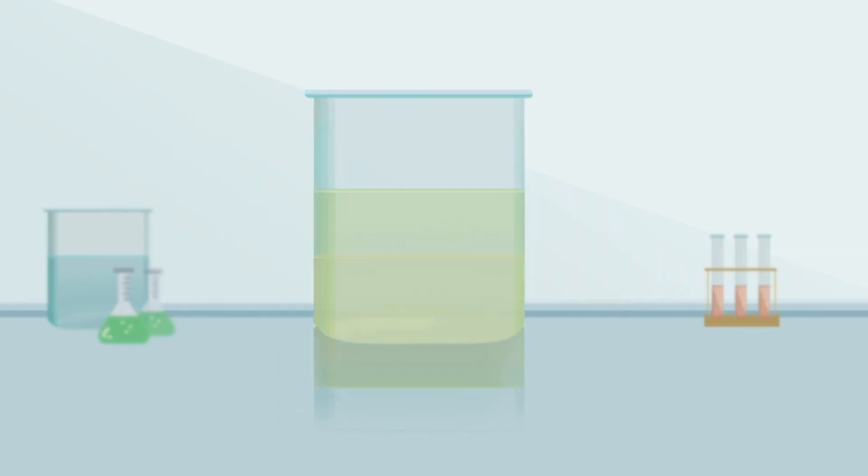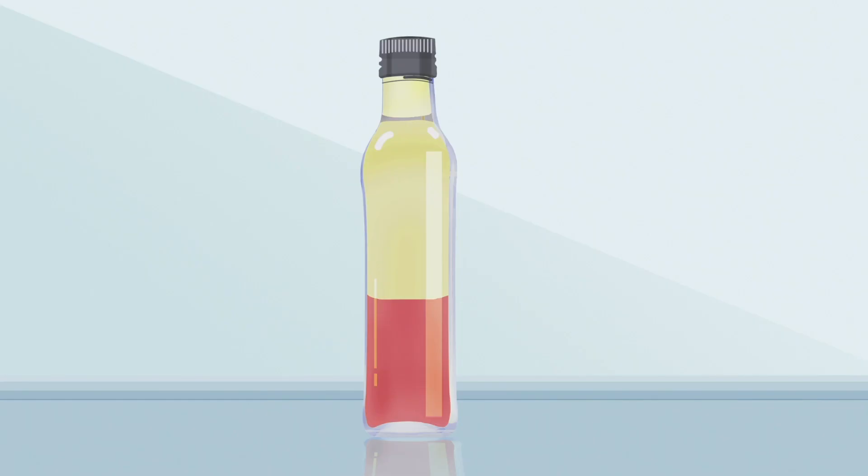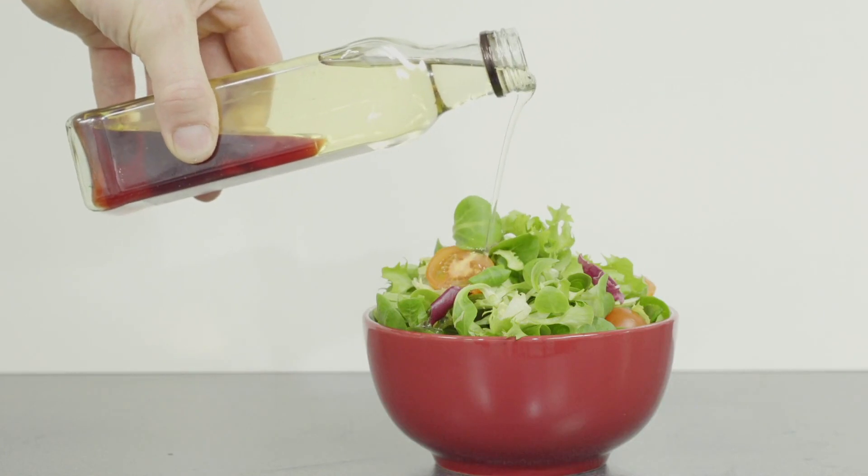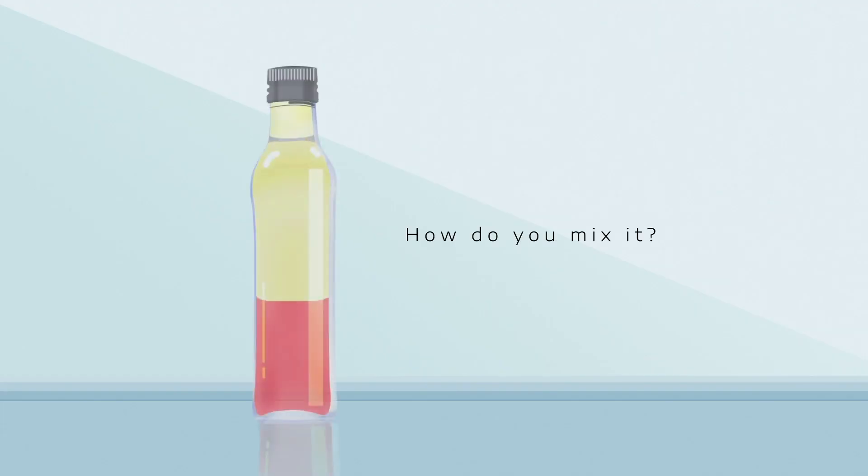We can explain how to make an emulsion with a common example most people will be familiar with: salad dressings. We've all seen bottles like this, with the oil and water separated into two distinct parts or phases. Now you don't want to pour that on your salad, so how do you mix it?